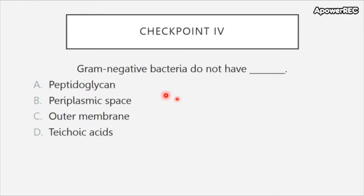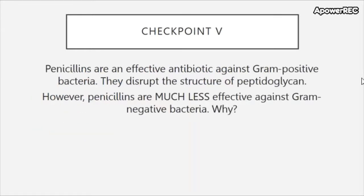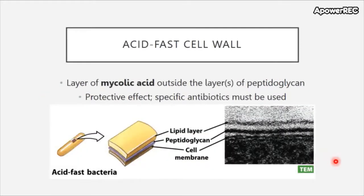Checkpoint four: gram negative bacteria do not have which of the following? A) peptidoglycan, B) periplasmic space, C) outer membrane, or D) teichoic acids. Checkpoint five: penicillins are an effective antibiotic against gram positive bacteria as they disrupt the structure of peptidoglycan, however penicillins are much less effective against gram negative bacteria — why?